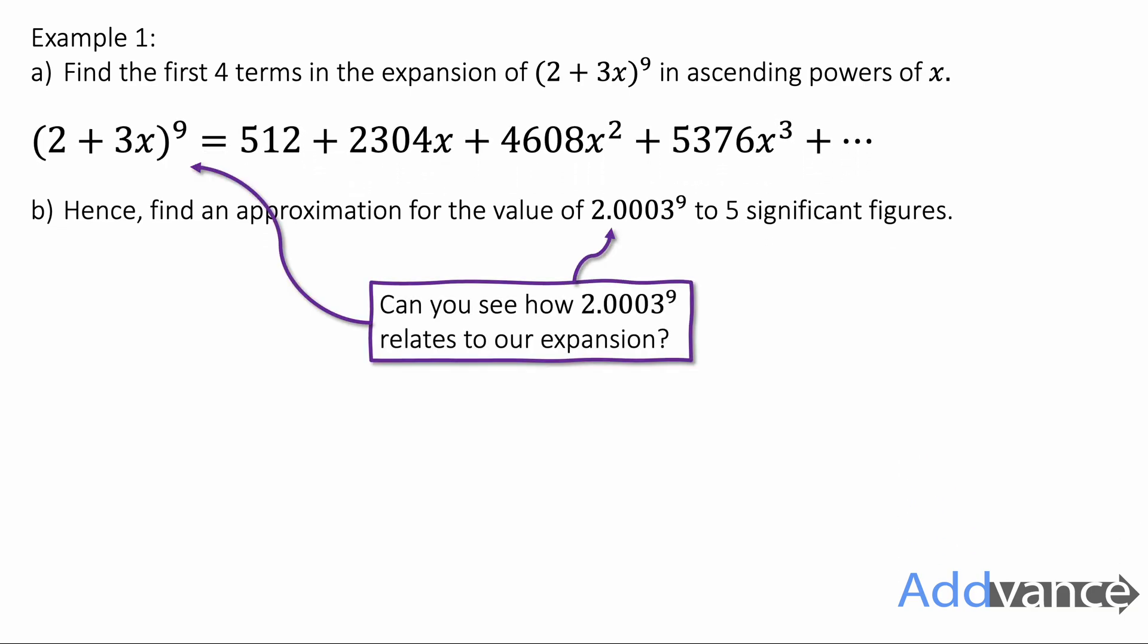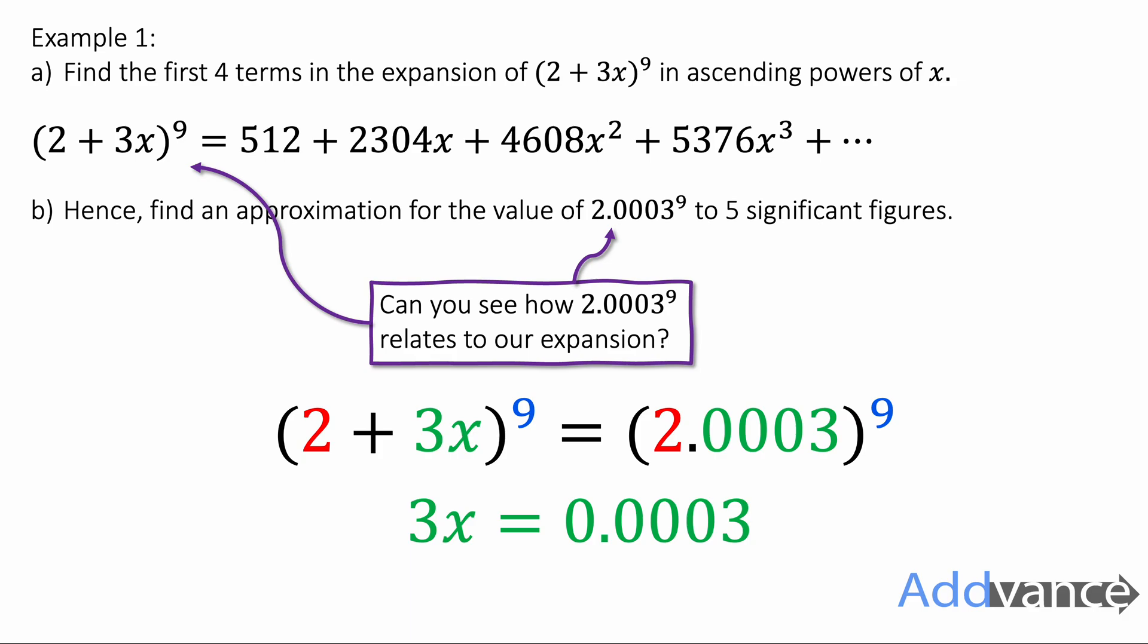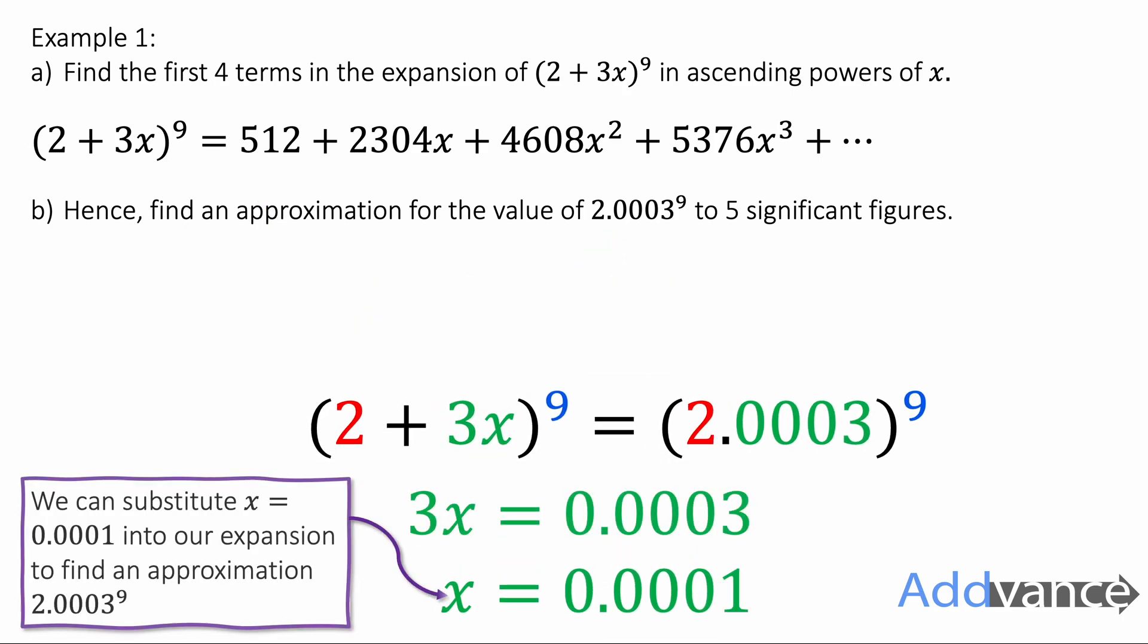Now part b, we're going to find an approximation for the value of 2.0003 to the power 9 to 5 significant figures. And can you see how this number 2.0003 to the power 9 looks a bit like our expansion? There is a similarity here and they do relate to each other. So 2 plus 3x to the power 9 should be the same as 2.0003 to the power 9. And we can make them equal to each other and compare them. The 2 and the 2 must be the same. The power of 9 is exactly the same. So therefore 3x equals 0.0003. And we can divide by 3 to find what x is. x must be 0.0001 for these two things to be the same.